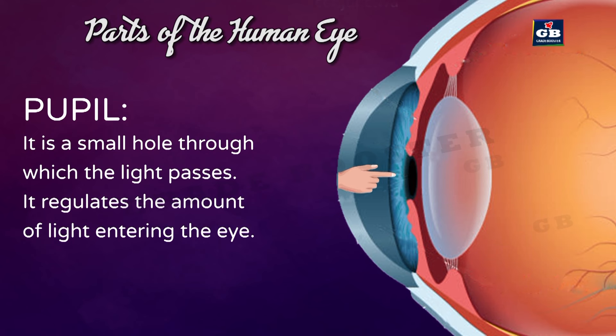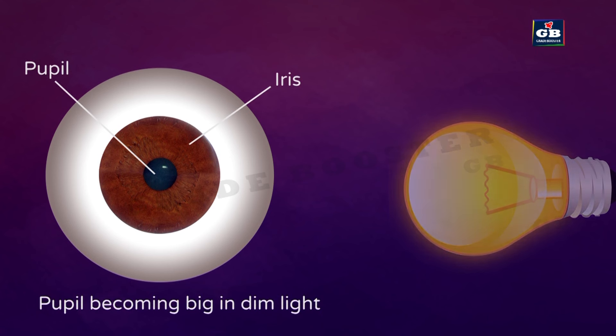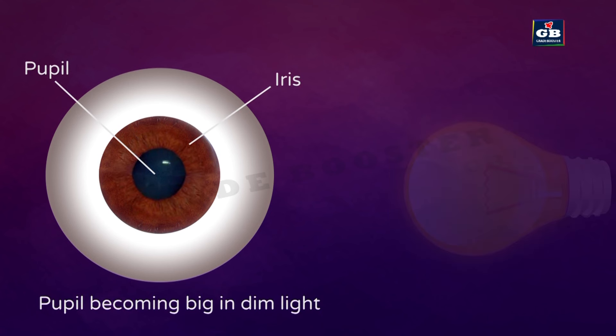When the light is low, the pupil opens up completely to allow more light into the eye. For example, when we enter a dark room, we will not be able to see anything at first. But after some time, the iris muscles make the pupil big, allowing more light in, so we can gradually see things even in low light.